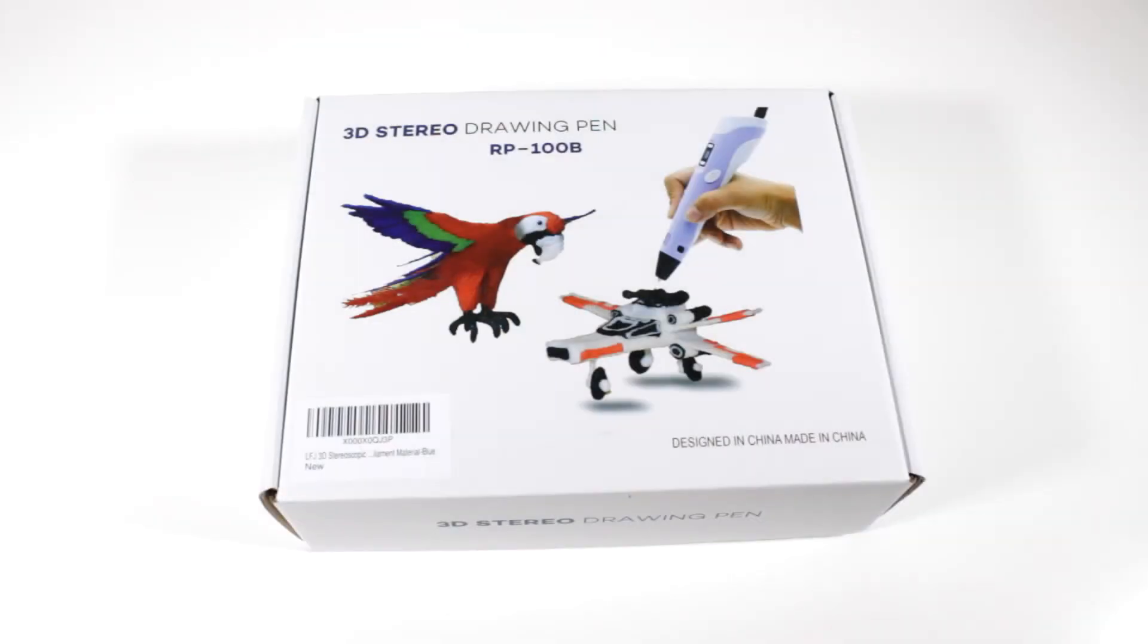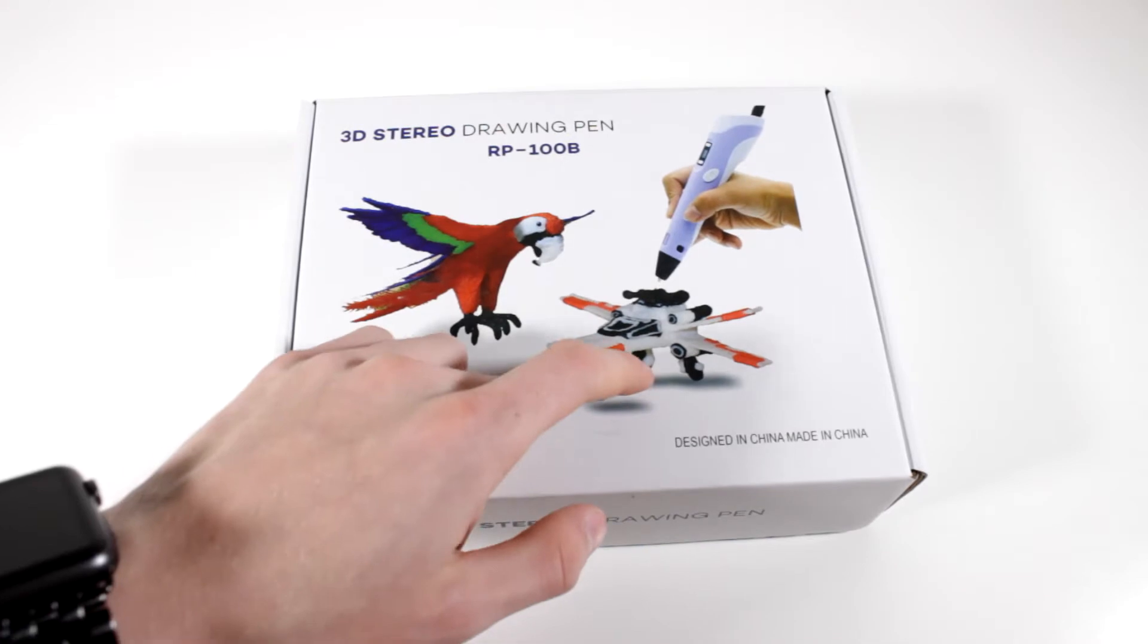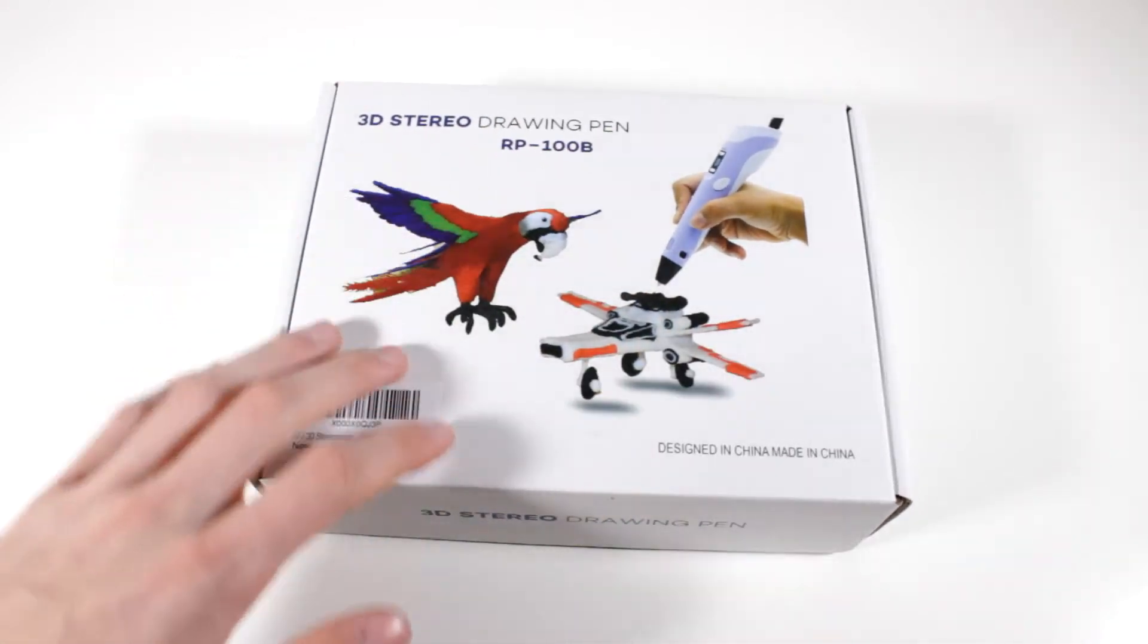Hey, what's going on guys. We'll be taking a look at a 3D stereo drawing pen. This is apparently from a company called LFJ - I don't think that's a very good brand name, but that is the name of the seller on Amazon, so LFJ is just kind of what I'm going to call the brand of this product.